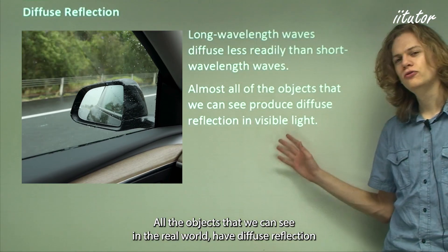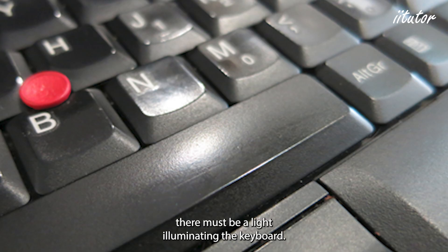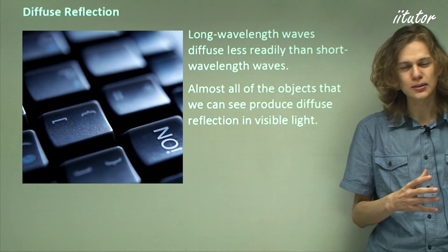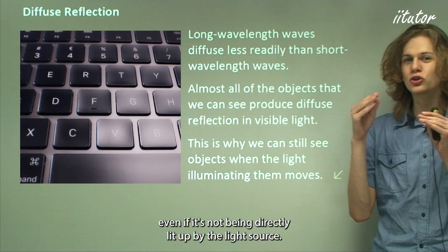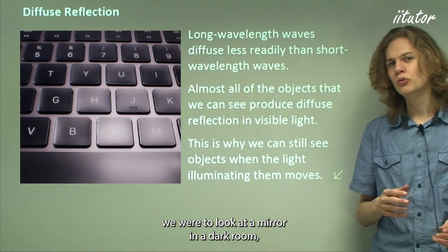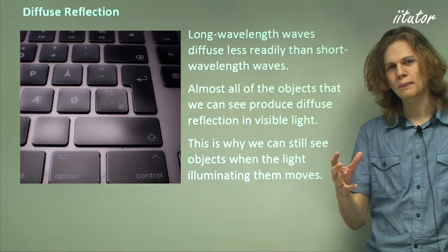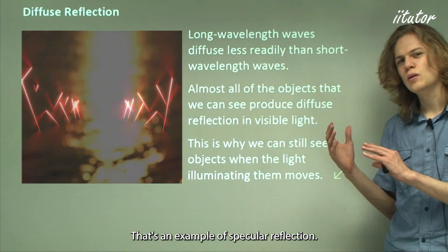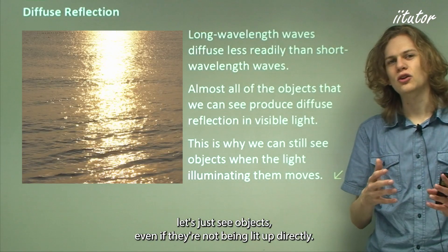All the objects we can see in the real world exhibit diffuse reflection rather than specular reflection. Take a keyboard for example: right in the middle of the spacebar there's a bit of specular reflection where we can see the light source. But we can see the rest of the keyboard illuminated by this light even though the keys aren't directly reflecting it — that's diffuse reflection. This is why we can see a piece of paper from any direction if it's being lit up, whereas a mirror in a dark room only shows a reflection if you're standing directly in line with the reflected light.